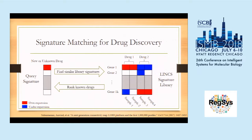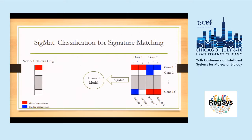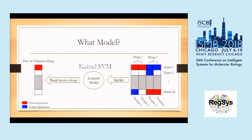We ask: if our purpose is to rank drugs, do we really need to go through this two-step process? Can we actually build a model from the library, and then each time a new signature comes in, use the trained model to rank the known drugs for any given signature? That is the spirit of SIGMAT, the classification scheme for gene signature matching. We attempted many models and find that the kernel support vector machine worked well for this task, so I will keep to this model for this presentation.